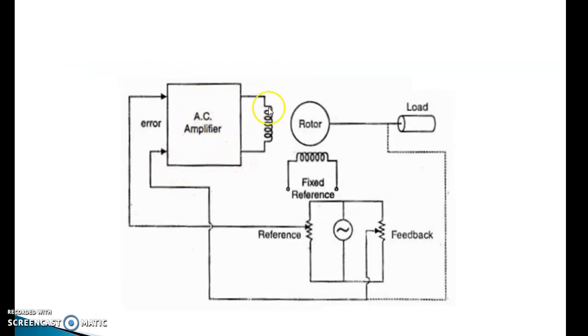This is the diagram for the servo motor. This is AC amplifier, this is motor rotor, this is fixed reference connected to the load. This is feedback voltage, this is AC voltage, this is reference voltage, and error voltage goes to the AC amplifier. This error voltage is released from the feedback.